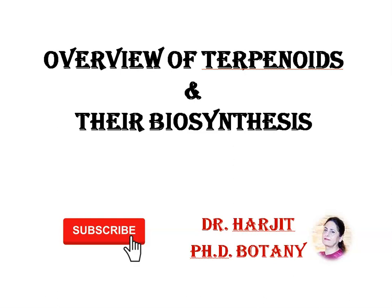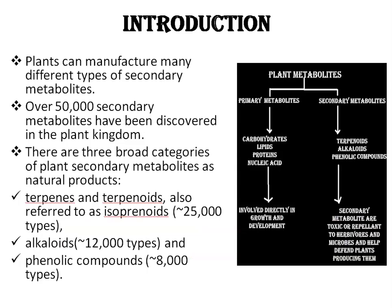Hello students, today we will discuss the overview of terpenoids and their biosynthesis. Hundreds of reactions simultaneously take place in a living cell in a well-organized and integrated manner. This entire spectrum of chemical reactions is collectively called metabolism, and the products of this metabolism are called metabolites. Plant metabolites are categorized into two main categories: primary metabolites and secondary metabolites.